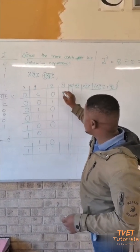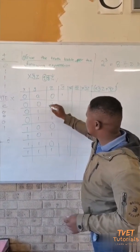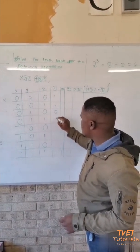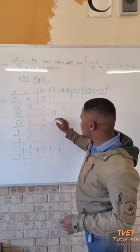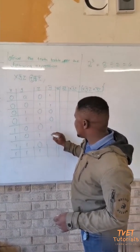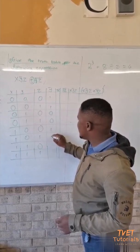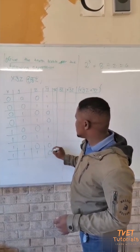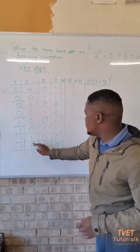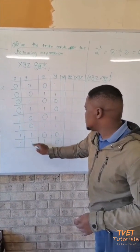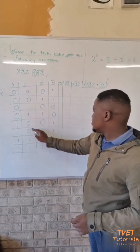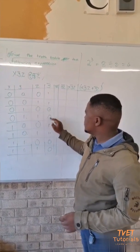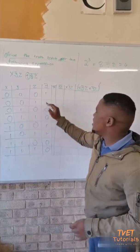Now we investigate Y-bar. If Y is zero, it becomes one. If Y is one, it becomes zero. Going through all eight rows: zero becomes one, one becomes zero, zero becomes one, zero becomes one, one becomes zero, one becomes zero, zero becomes one, one becomes zero.